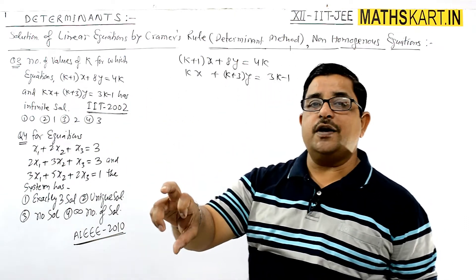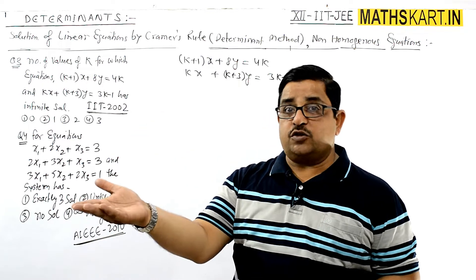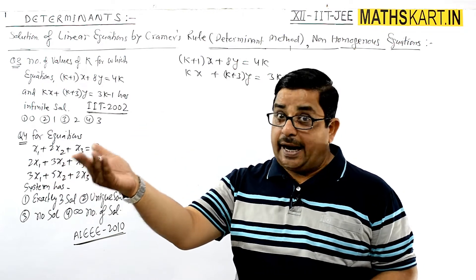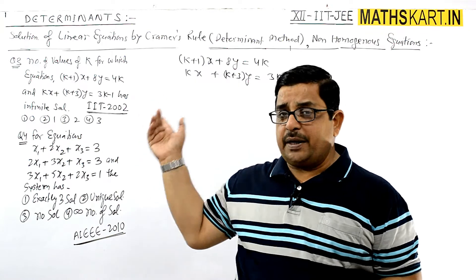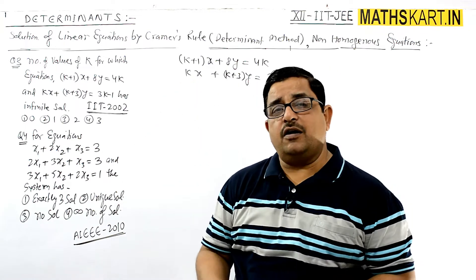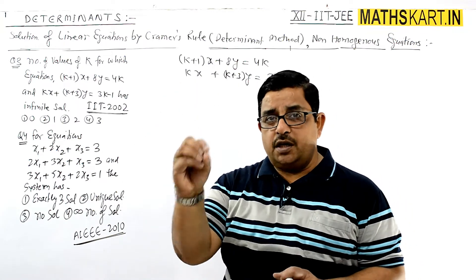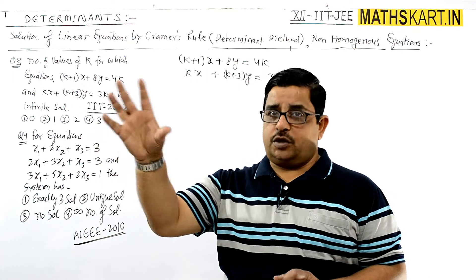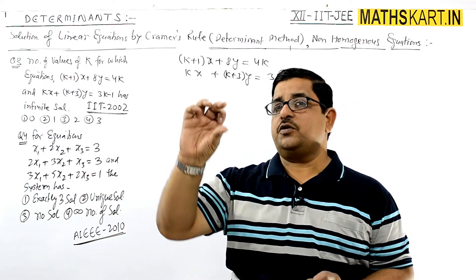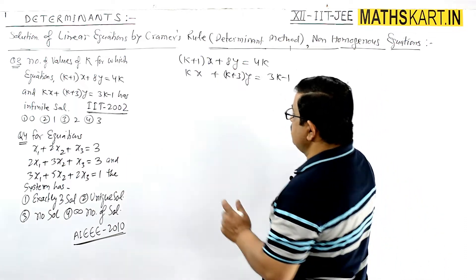we need D = 0, and D1, D2, D3 all equal to zero. But since these equations are in two variables, we need D = 0, D1 = 0, and D2 = 0. We'll write these conditions.